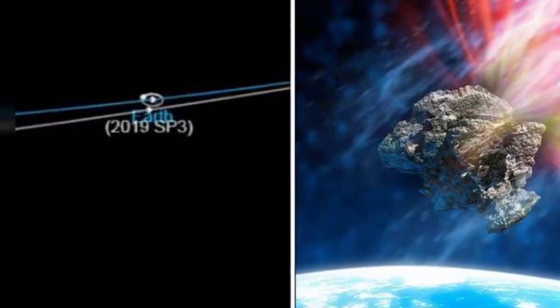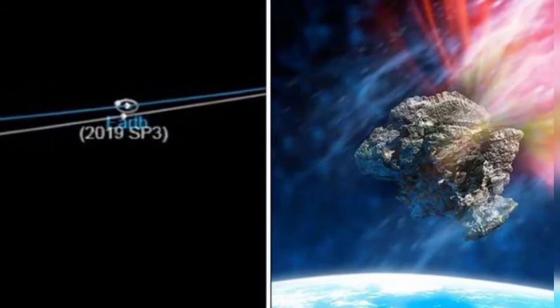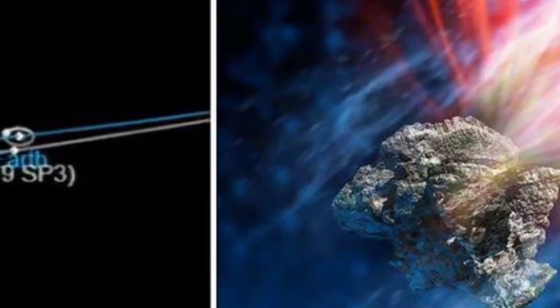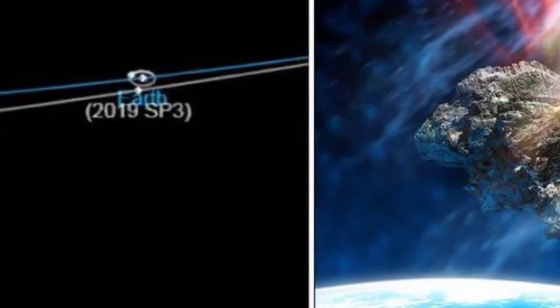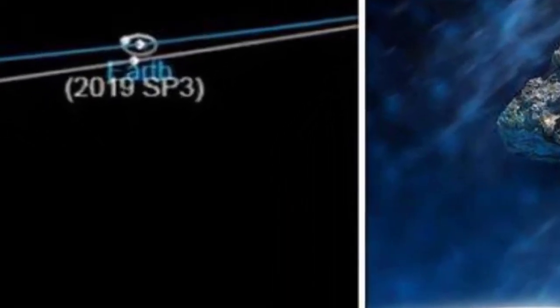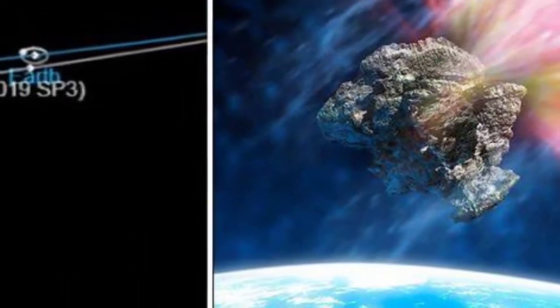According to NASA, asteroid 2020 ND is about 170 meters long and will be as close as 0.034 astronomical units, or 5,086,328 km, to our planet. The asteroid is traveling at a great speed of 48,000 km per hour.